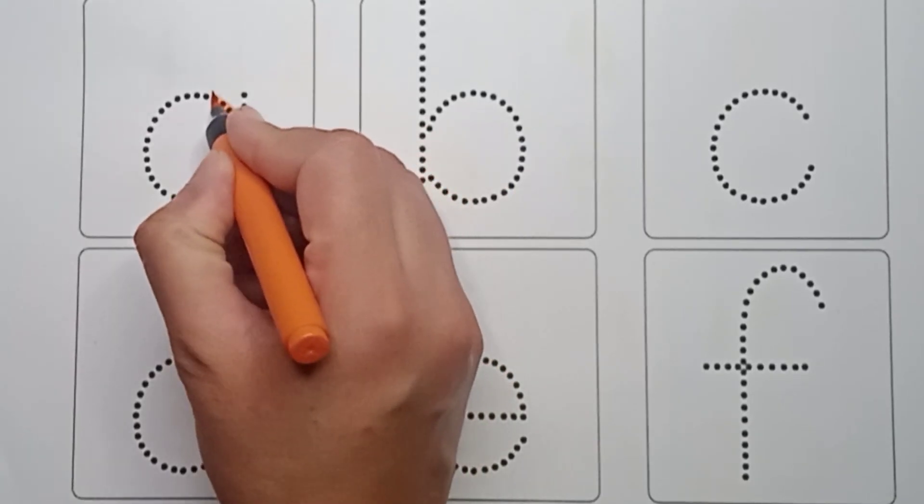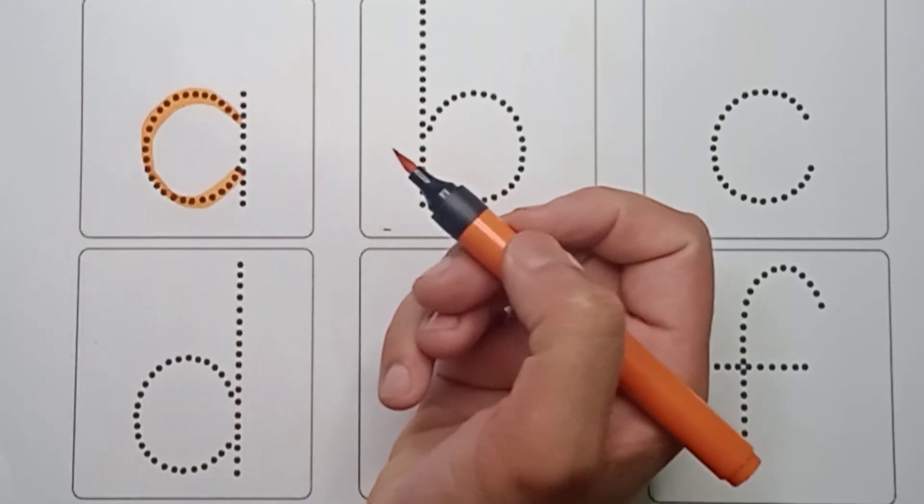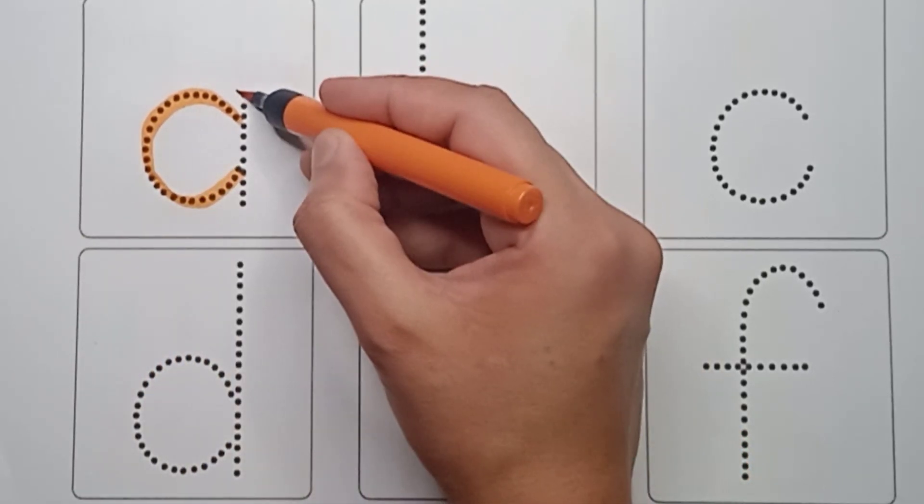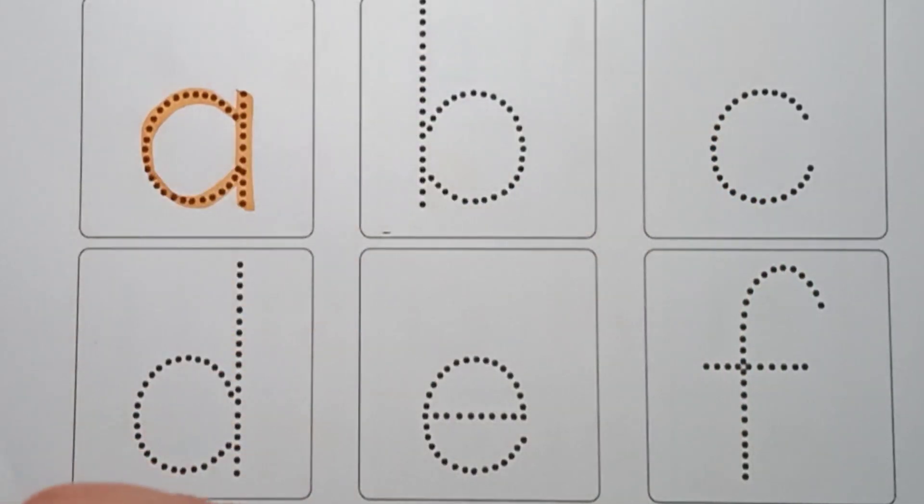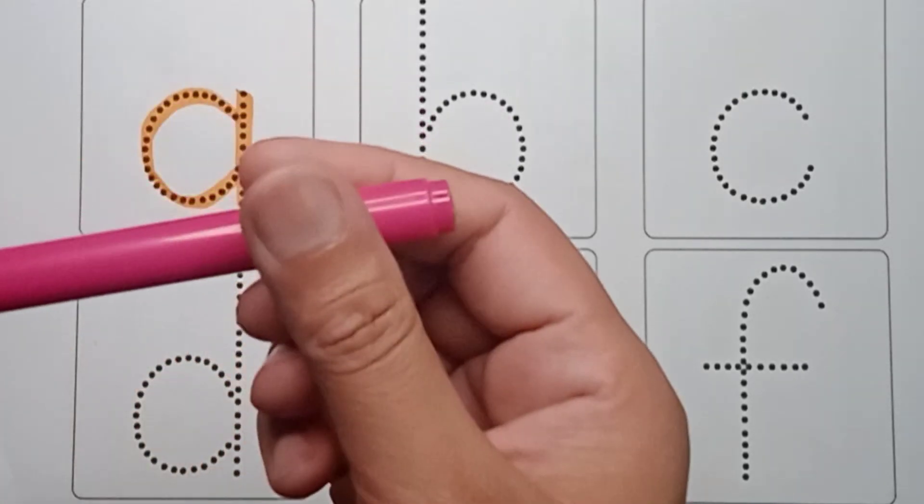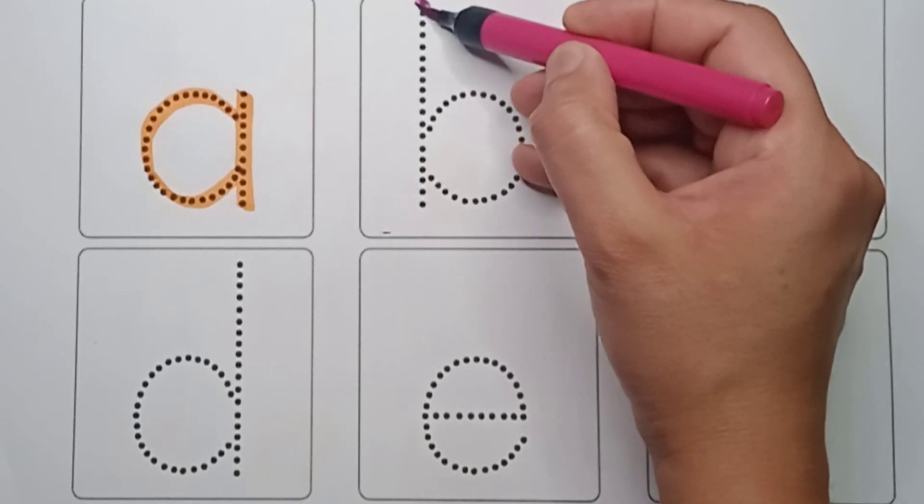A. How do we write? First make a C. Look at this, it's C. And now a standing line. It's A. This one is a small letter A. A is for aeroplane. It's pink color B. How do we write?